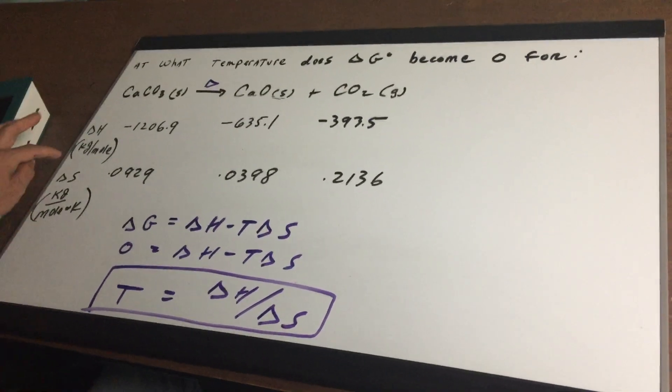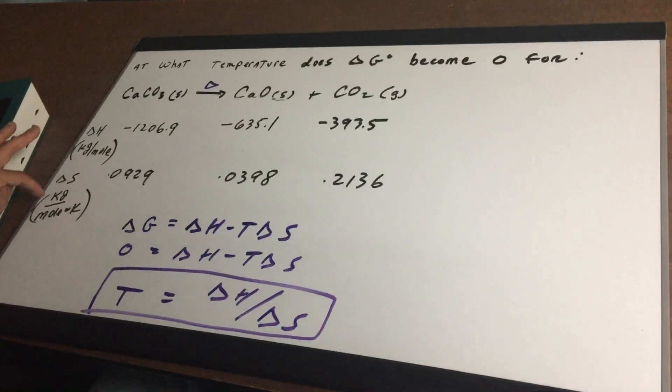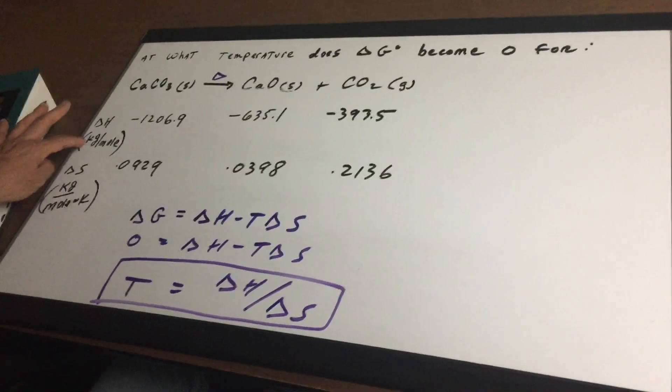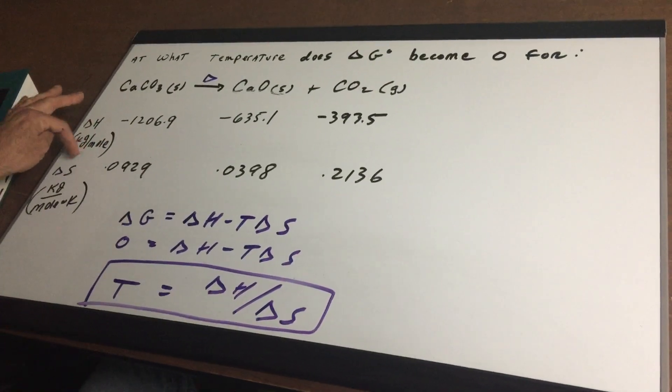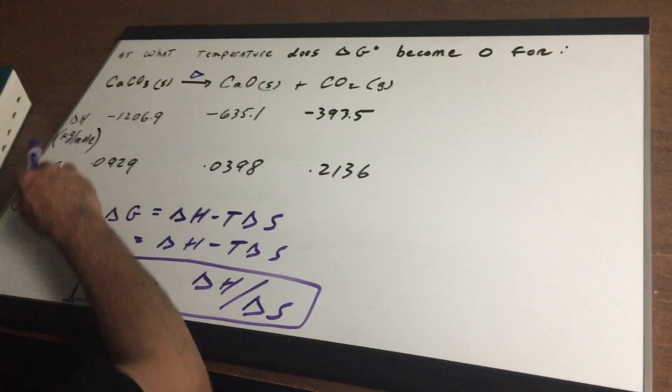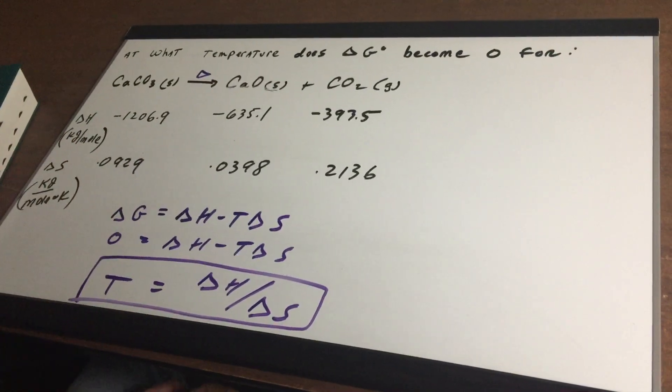Now, for the DAT exam, you want to make sure that this unit is the same as this. So if this was in joules, you want to make sure that they're either both in joules or both in kilojoules. Here, I was nice to you. I gave it to you in kilojoules. So you got to be careful.